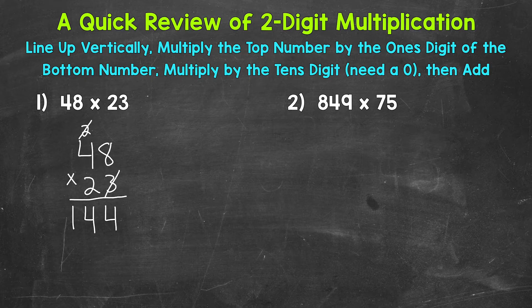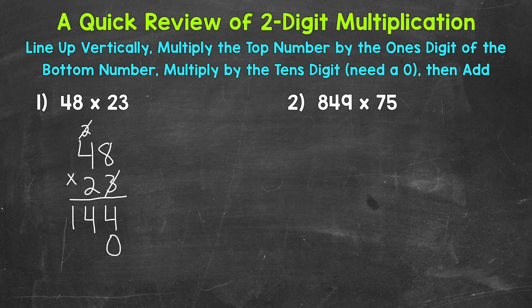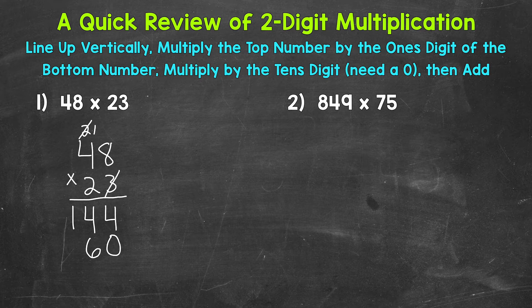Our next step: we're going to multiply the top number by the tens digit of the bottom number — the two from 23. We do need a zero since we are moving over to the tens place, and that two has a value of 20. So we write a zero here because we're in the tens place. Once we have that zero, we do two times eight and then two times four. Two times eight is 16, so we write our six and carry our one. Two times four is eight plus the carried one is nine, and we end up with 960.